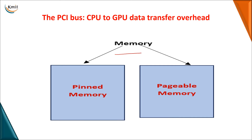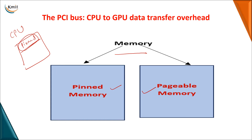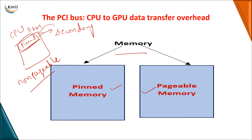The next factor affecting overhead is memory. You have two types: pinned memory and pageable memory. Pinned memory means a particular part of the CPU memory is fixed — you cannot move whatever data is stored there. You cannot transfer data from the CPU RAM to secondary memory, meaning swapping cannot be done for that portion. That is why it is called pinned memory or non-pageable memory — unlike normal paging in operating systems, this part of memory cannot be moved to secondary memory.